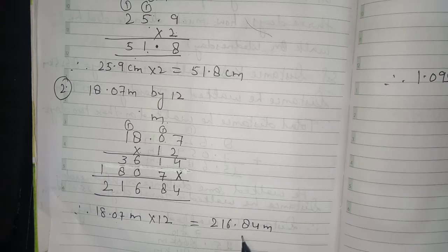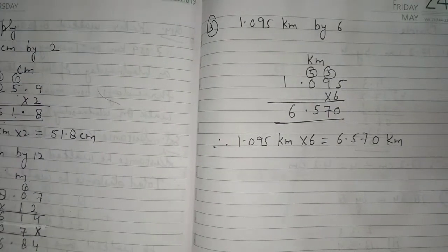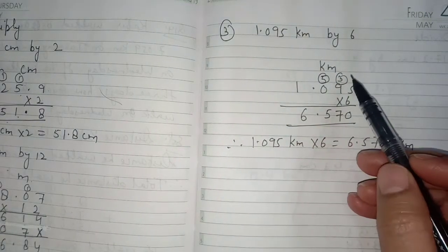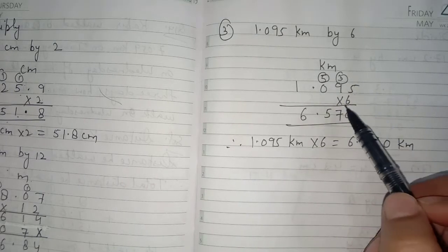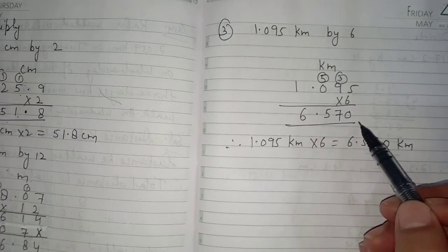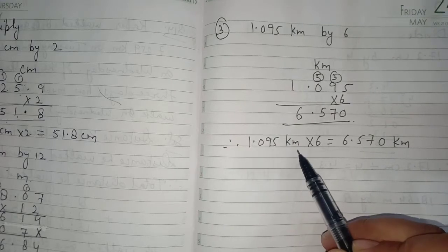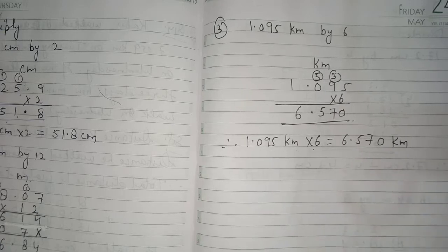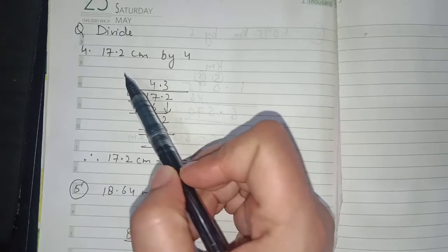Similarly, the next sum: 1.095 kilometer × 6. Write the unit in common, then 1.095 × 6, which gives us 6.570. Therefore 1.095 kilometer × 6 = 6.570 kilometers.